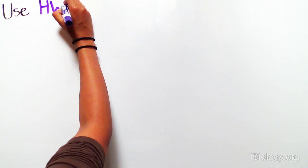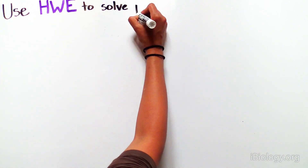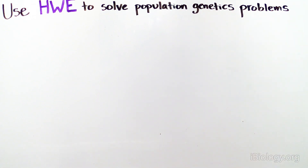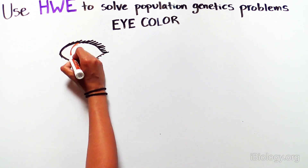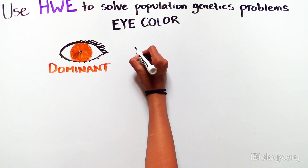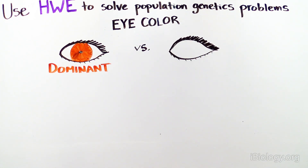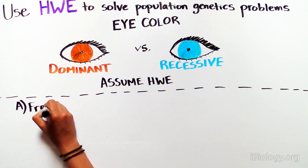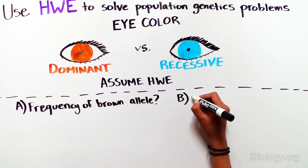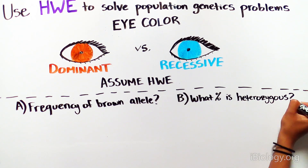Now let's do a third example to see how we can use Hardy-Weinberg equilibrium to solve population genetic problems. You are studying eye color in a population of squirrels — either brown eyes or blue eyes — and you know that blue is recessive. You look at all of your squirrels and find that 4% of the population has blue eyes. How can you figure out A, the frequency of the brown eye allele, and B, what percentage of the population is heterozygous for this trait?